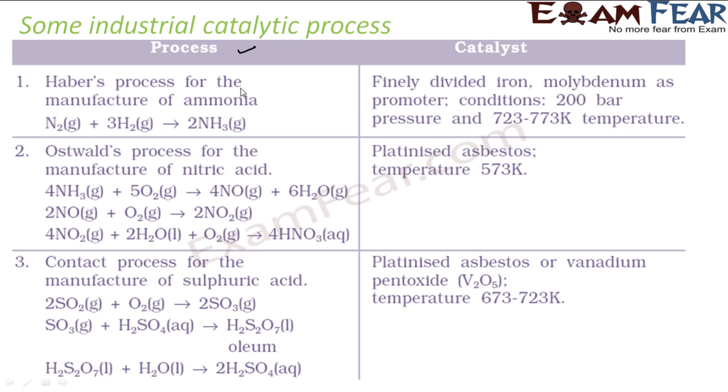In Haber's process for the manufacture of ammonia, the reaction is N2(g) + 3H2(g) → 2NH3(g). The catalyst used is finely divided iron with molybdenum as a promoter to boost the activity. The conditions are 200 bar pressure and 723-773K temperature.